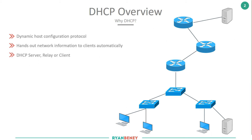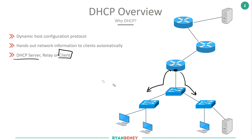DHCP comes in three flavors. We have DHCP server, where our routers can actually give out IP addresses to people on the network. We can become clients, meaning our router can obtain an IP address from another router or from a DHCP server. The server hands them out, the client accepts them.